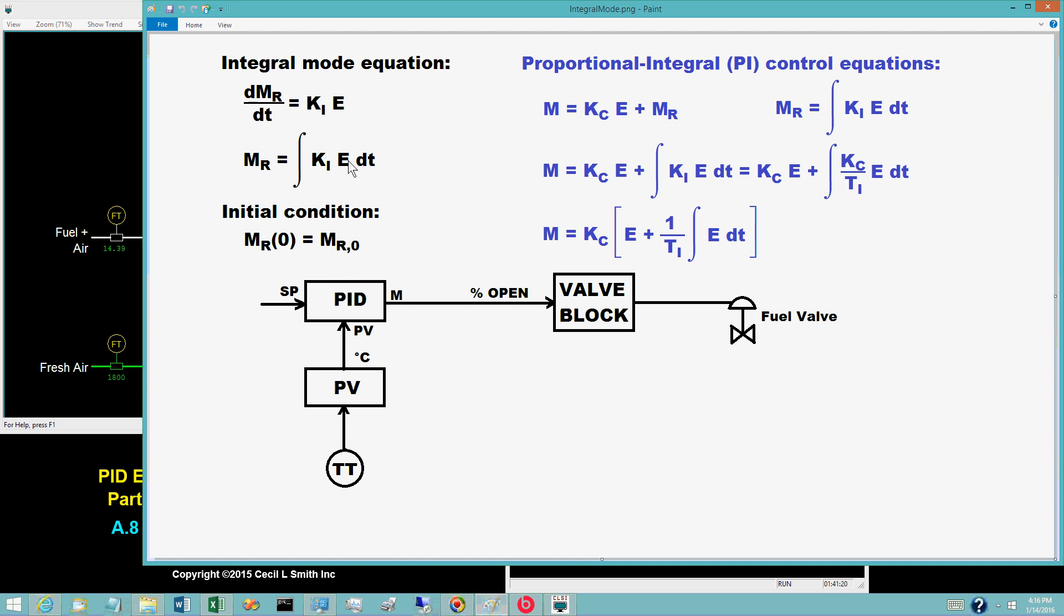On a positive control error, the controller output bias increases. On a negative control error, the controller output bias decreases.